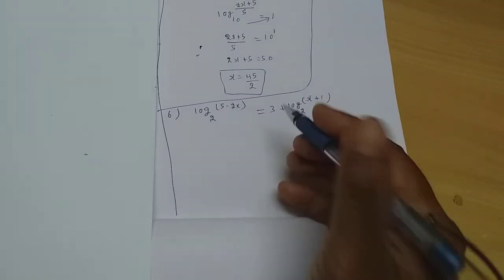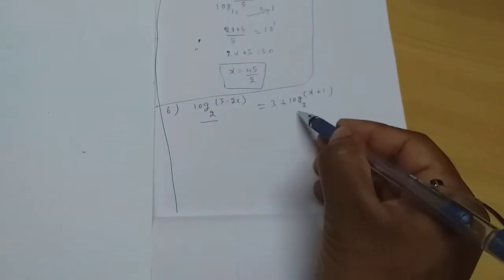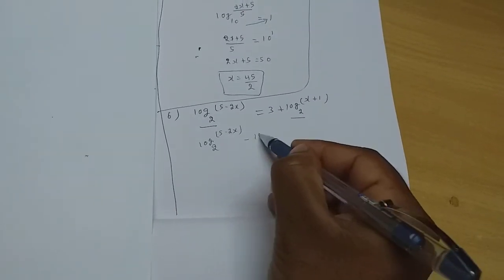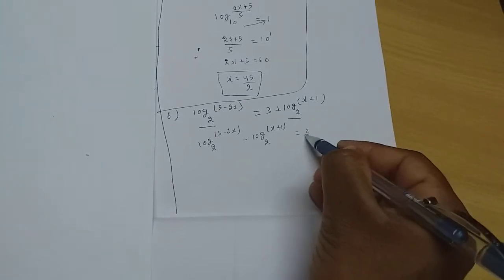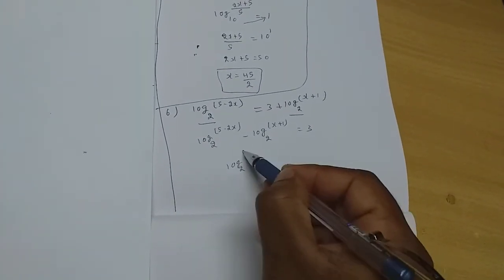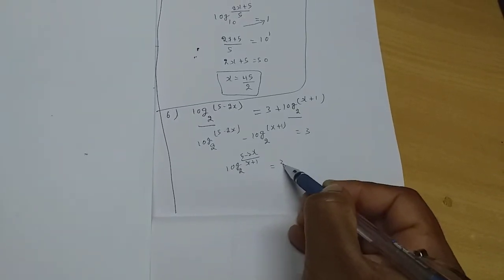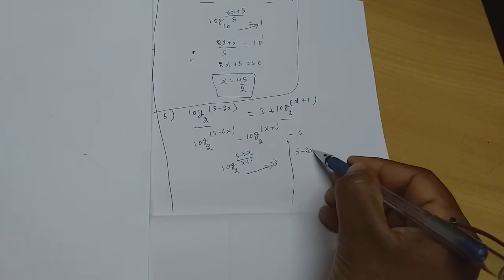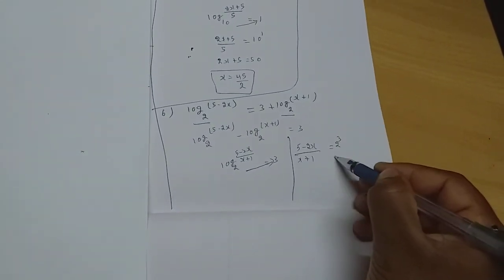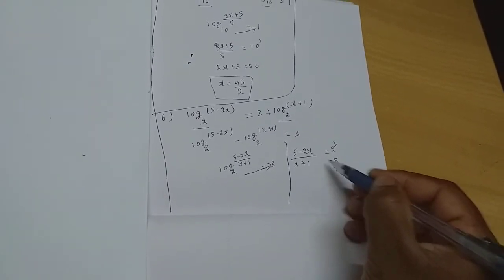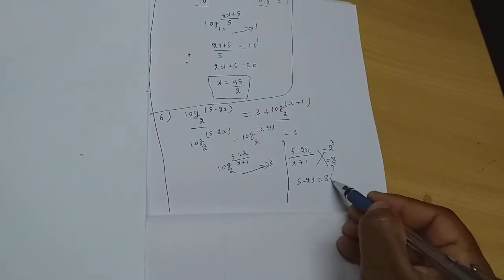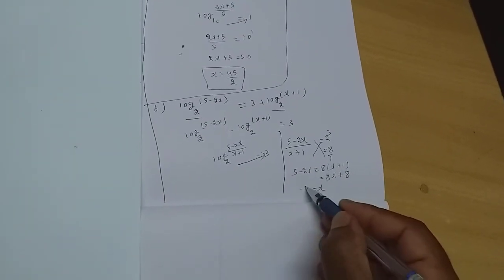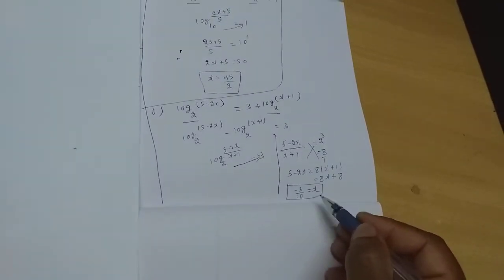Now look at the next sum: log(5−2x) base 2 = 3 + log(x+2) base 2. Bring all log terms to one side: log(5−2x) − log(x+1) base 2 = 3. Since bases are same and we have subtraction, divide: log[(5−2x)/(x+1)] = 3. Remove the log: (5−2x)/(x+1) = 2³ = 8, so 5−2x = 8x+8, giving x = −3/10.